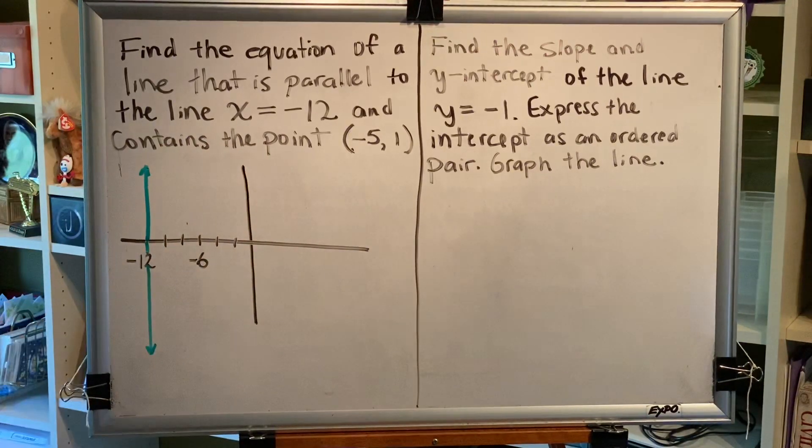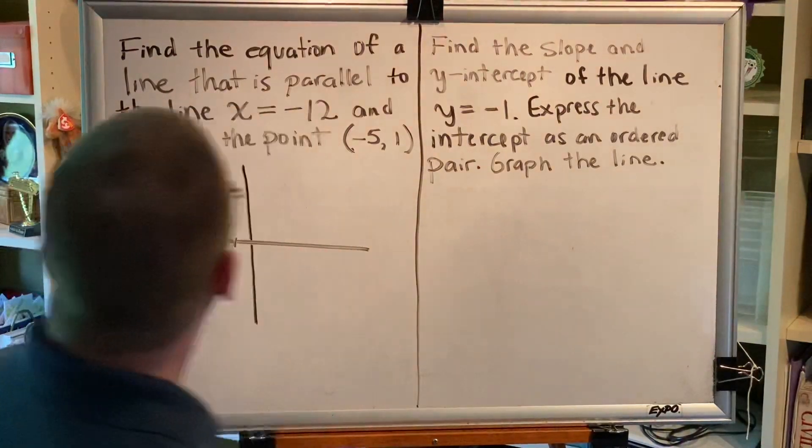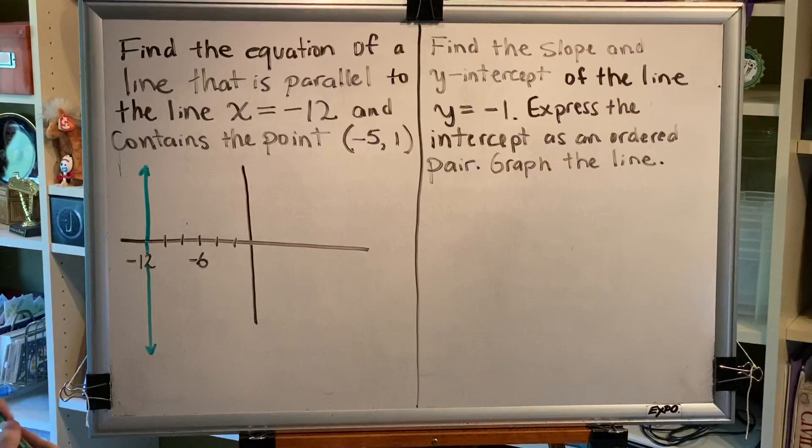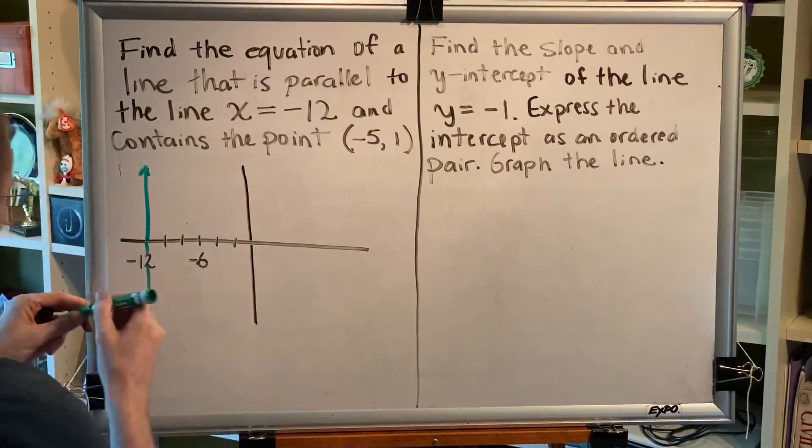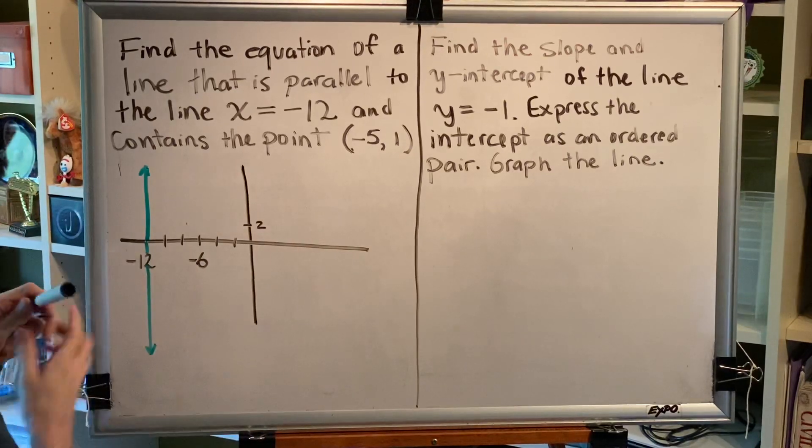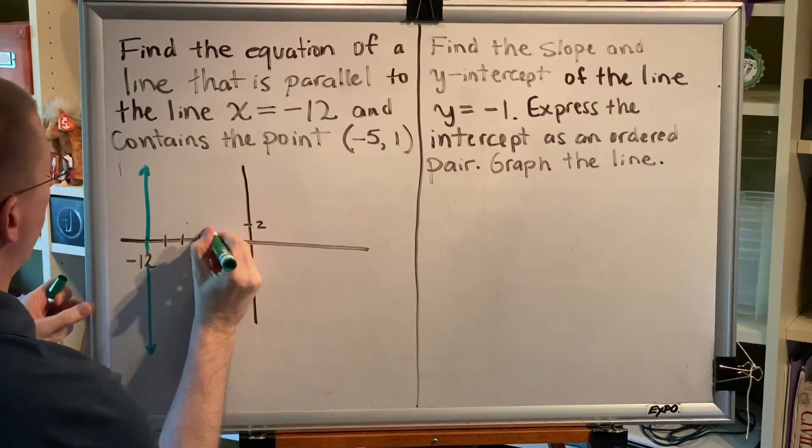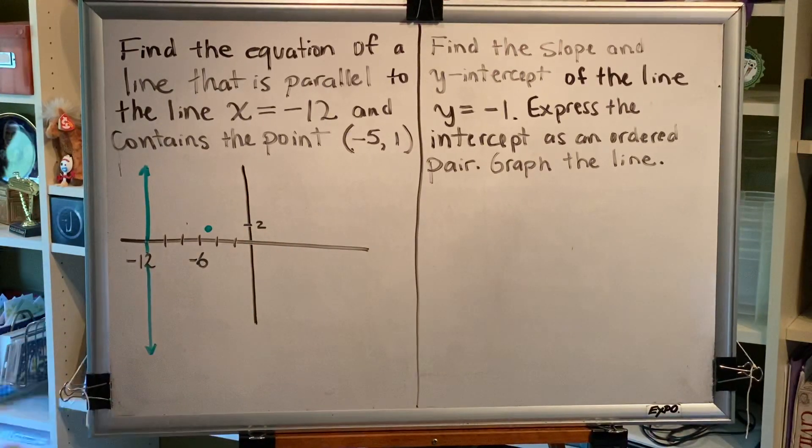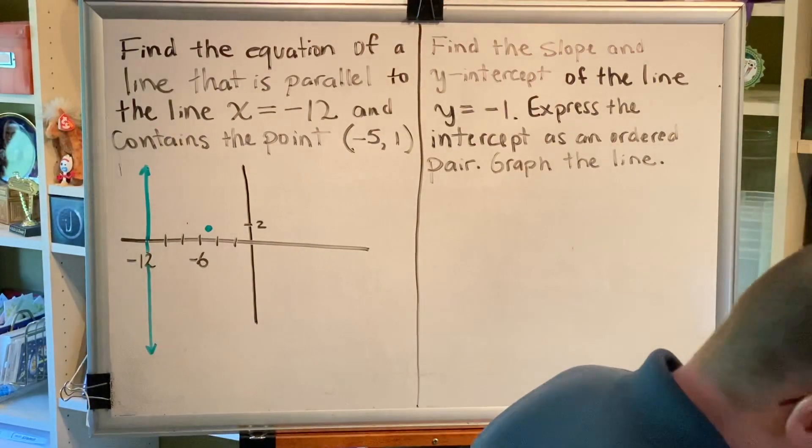Now we need to find an equation of a line that's parallel to this line but goes through the ordered pair negative 5 comma 1. Let's plot that point. Negative 5 comma 1 would be right here.